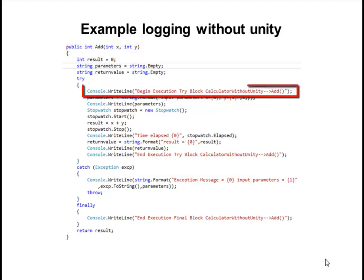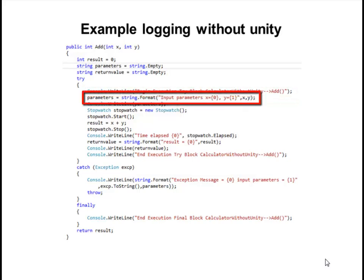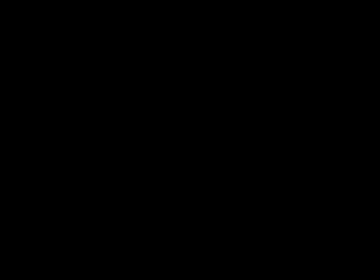The very first line that we are going to log is that the method has begun execution into the try block. The next thing we will log is the name and the value of each parameter passed to the method. Then we will start the stopwatch to perform our calculations and then stop the stopwatch.